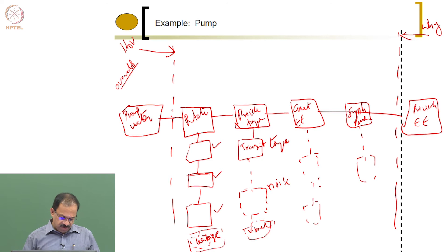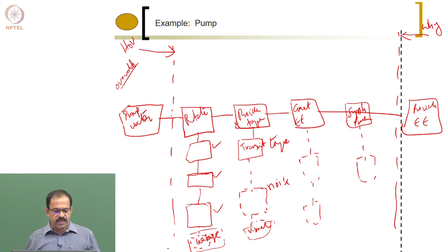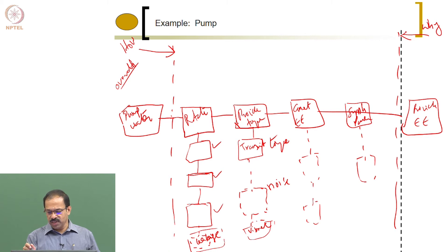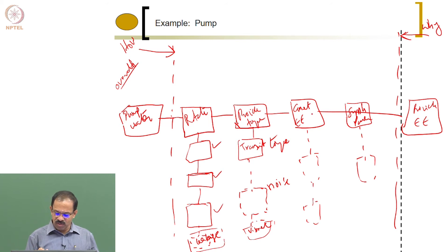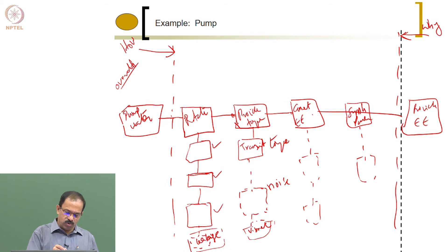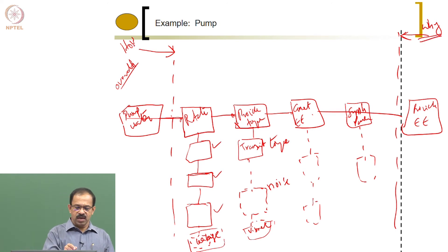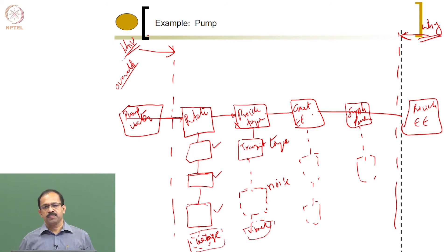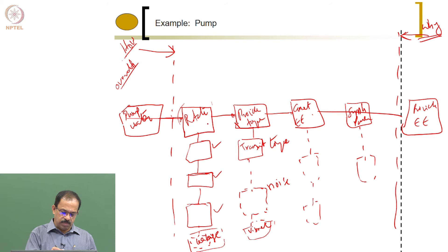As a designer, you can find out which function to improve in order to make the product better. By asking 'why' — why provide electricity? To supply power. Why supply power? To convert to torque. Why convert torque? To rotate the impeller. Why rotate the impeller? To pump the water. This way you identify the critical path functions and all secondary functions resulting from them.